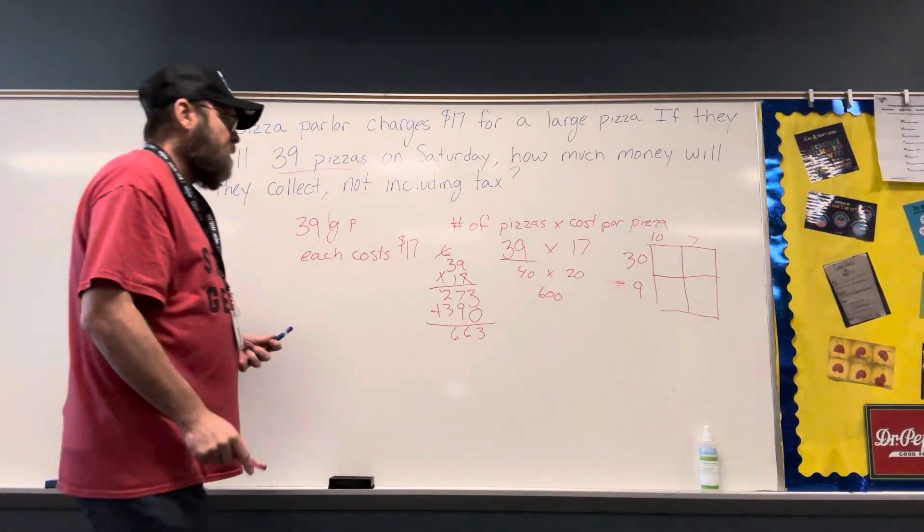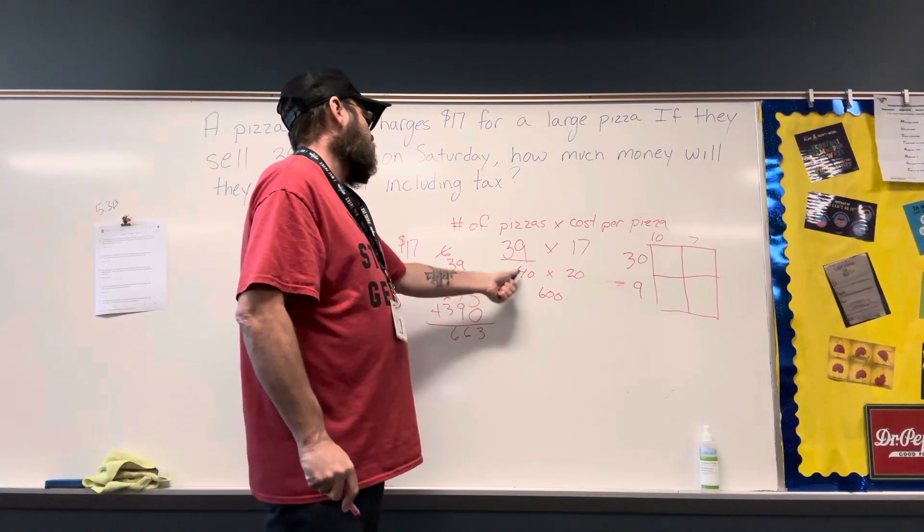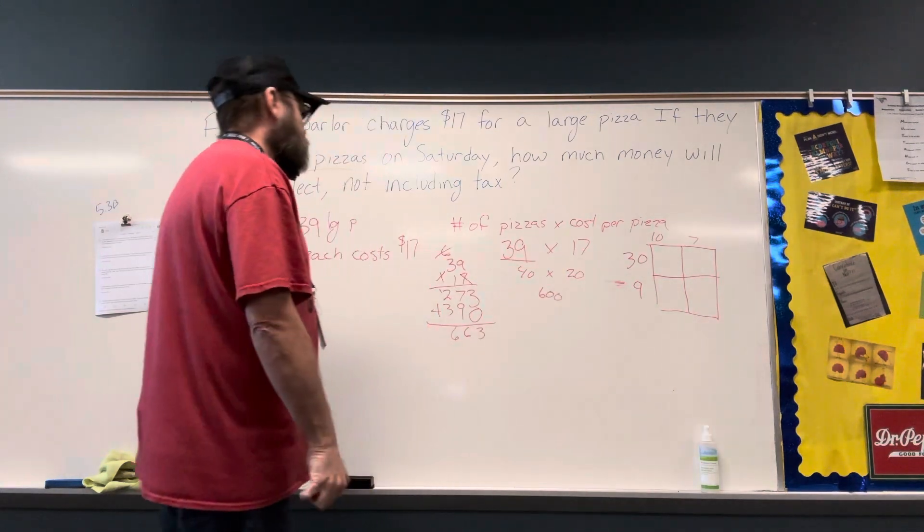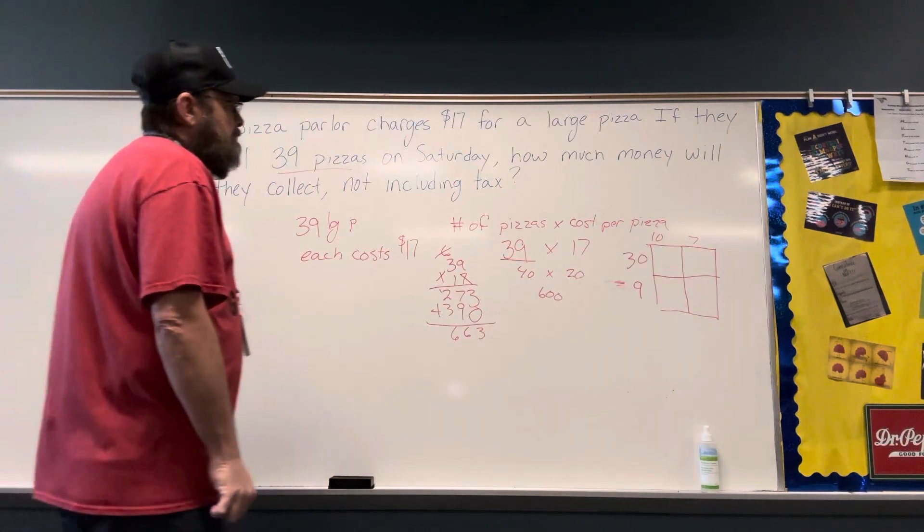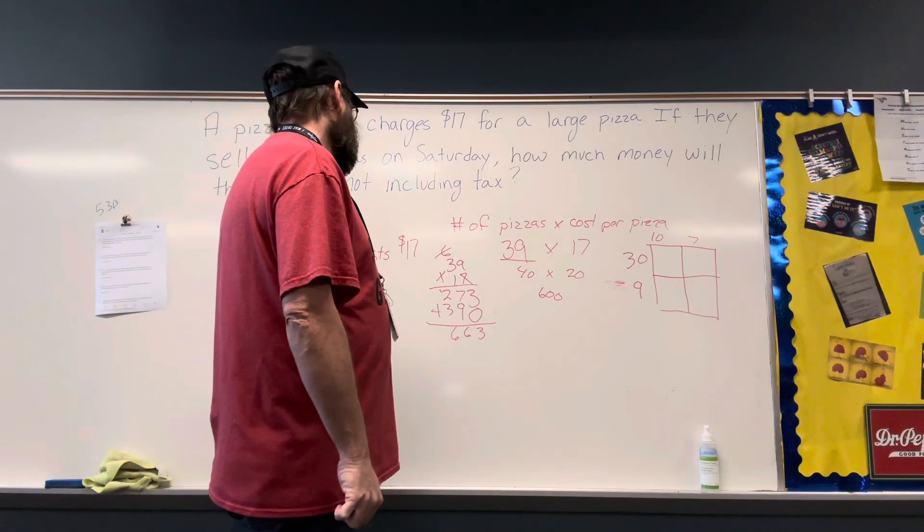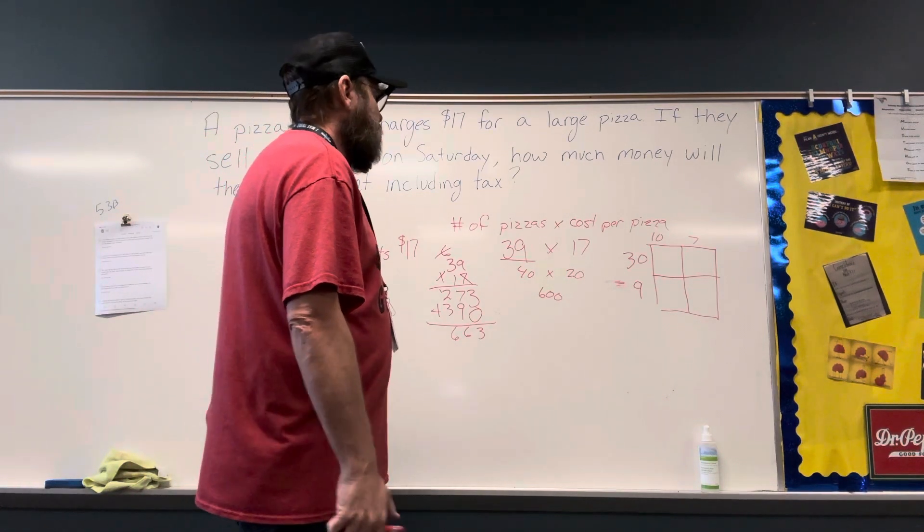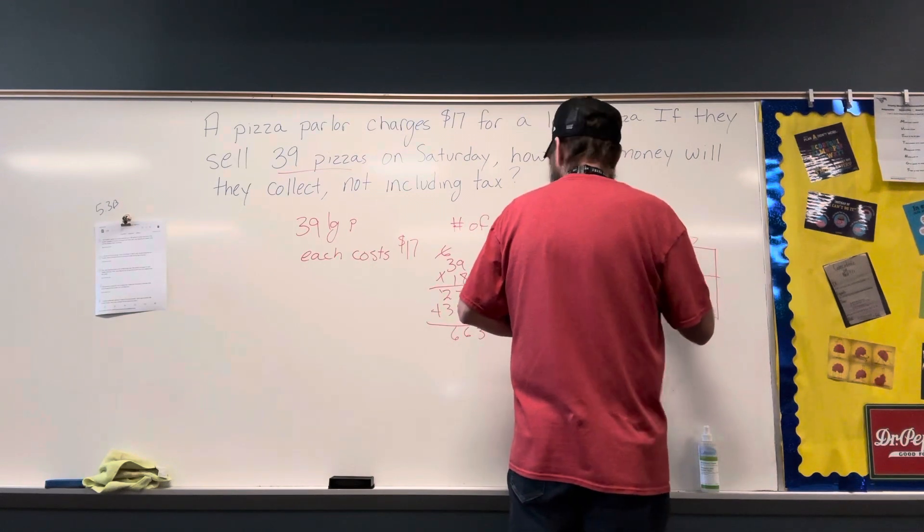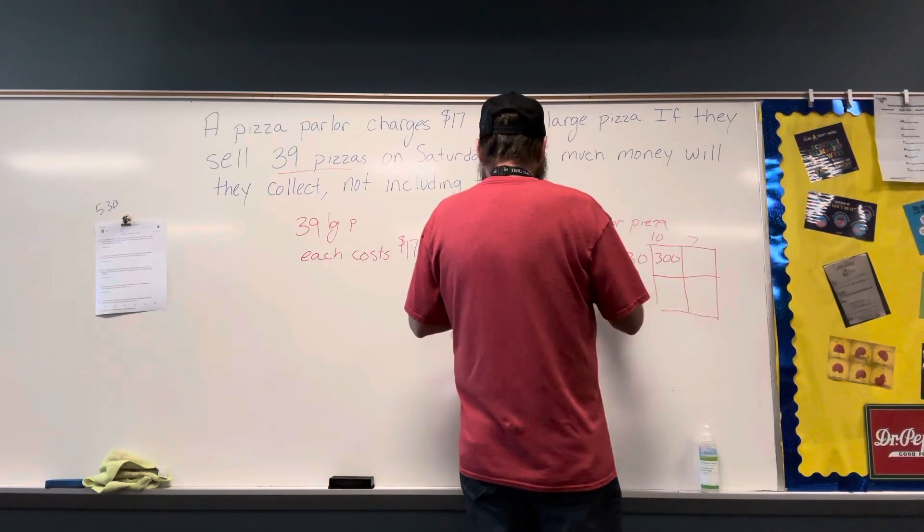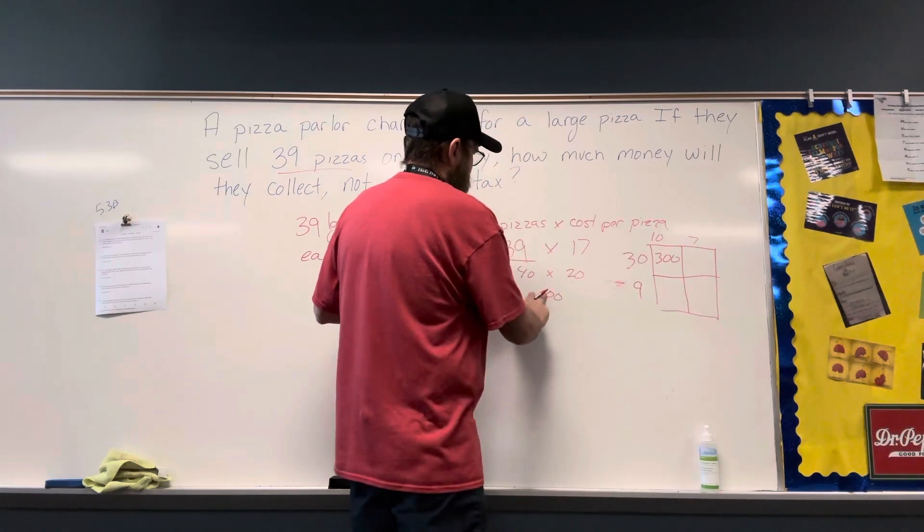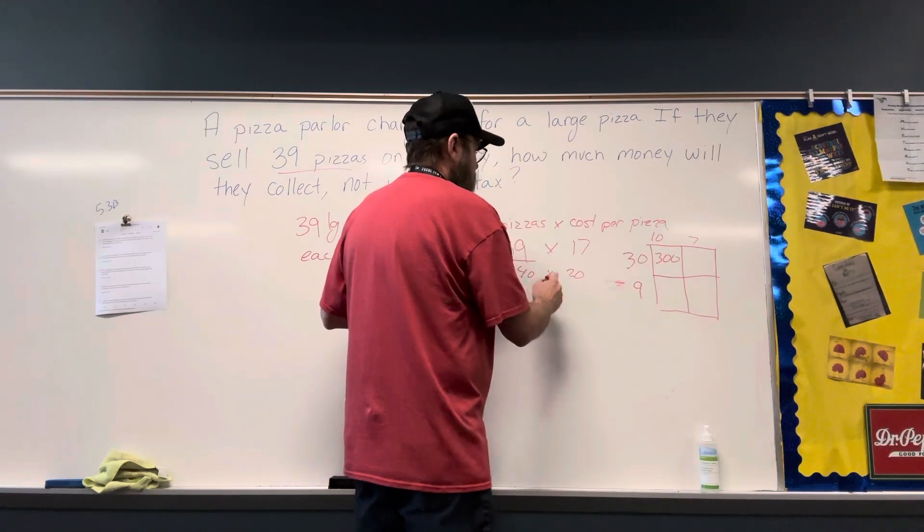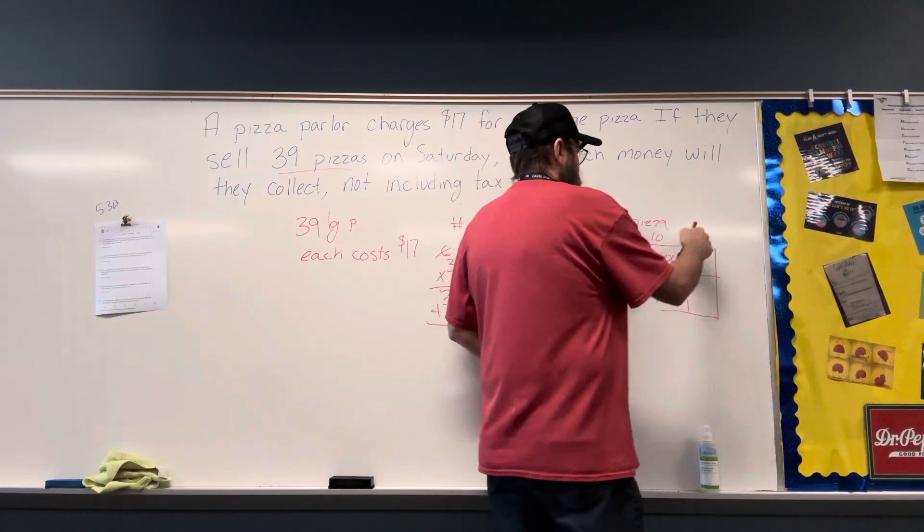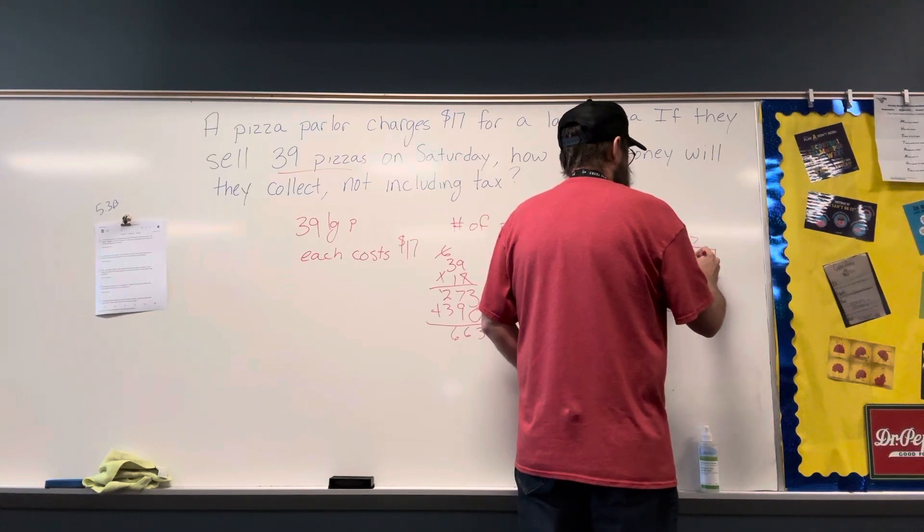663. I said my answer since I rounded up should be less. Let's check it because that doesn't seem right to me. So let's go 30 times 10 is 300. Oh, because I did 40 times 20 should be 800, but we'll check it anyway. 30 times 7 is 210.